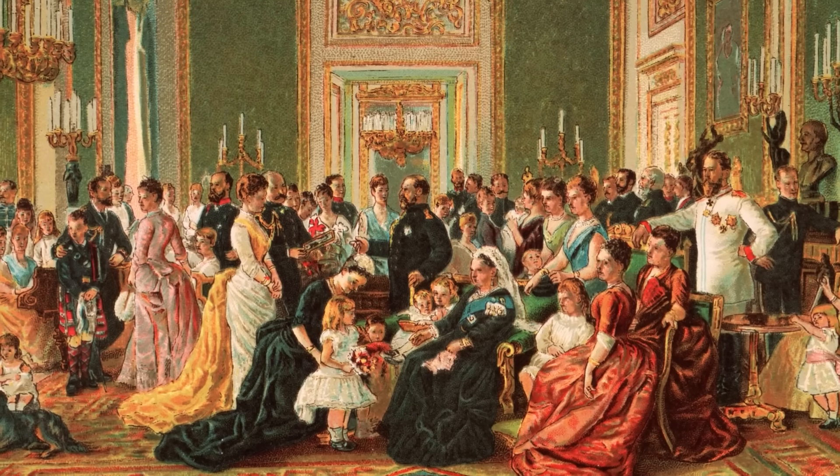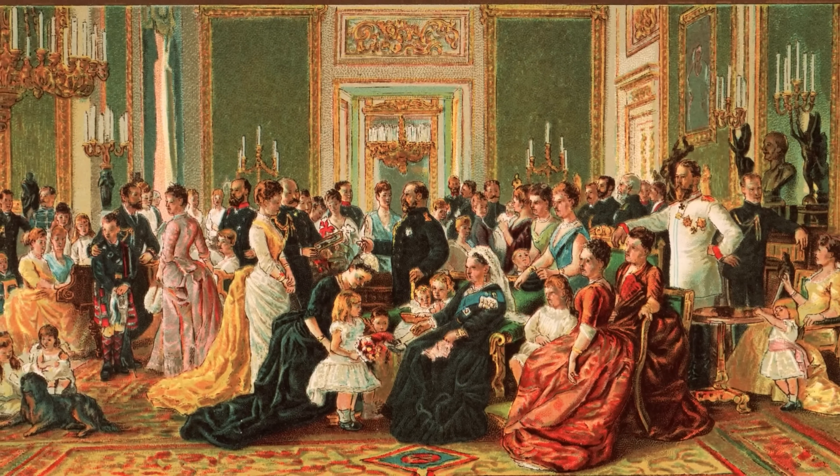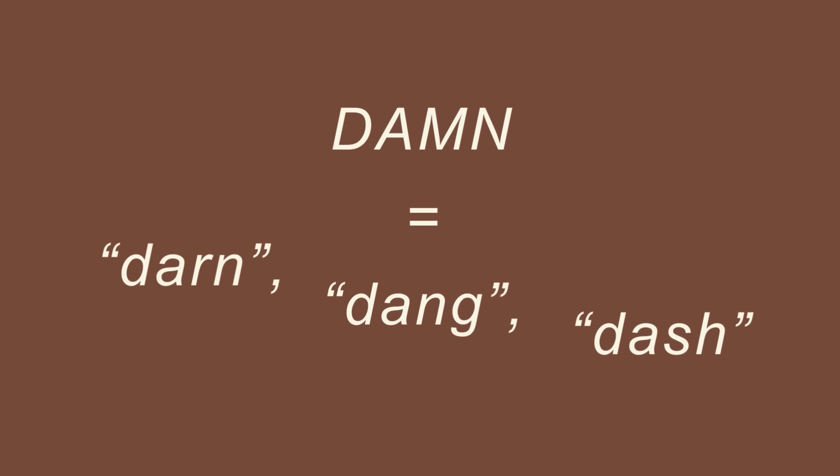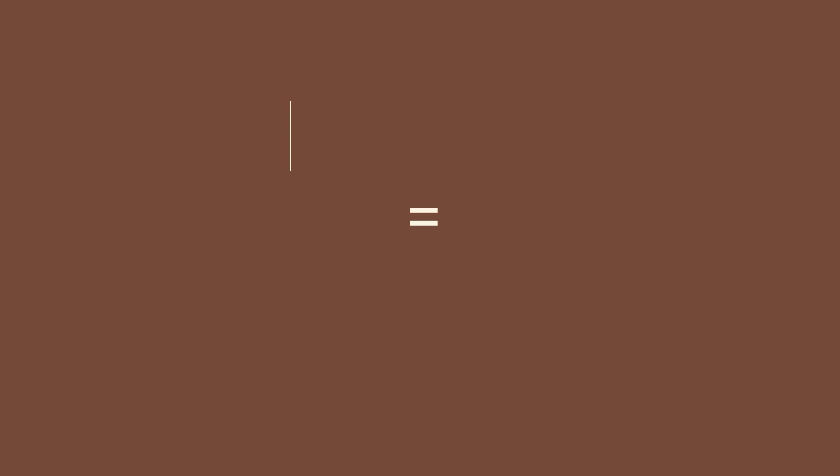Fast forward to the Victorian era — a time known for strict moral codes, respectability, and propriety. Almost everything was offensive. Blasphemy was again a no-go, words of sexual or visceral nature were gone from print and conversation, and everything else was euphemized. 'Damn' became 'darn,' 'dang,' or 'dash.' The devil became 'dickens' or 'deuce.' 'Bloody' became 'bleeding' or 'ruddy.' 'Pregnant' became 'in the family way' or 'expecting.' 'Trousers' became 'inexpressibles' or 'unmentionables.' And 'legs' became 'limbs' or 'lower extremities.'